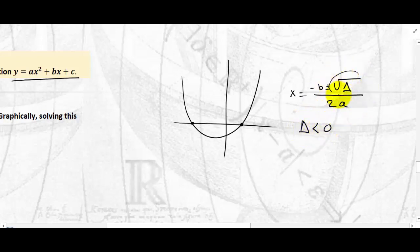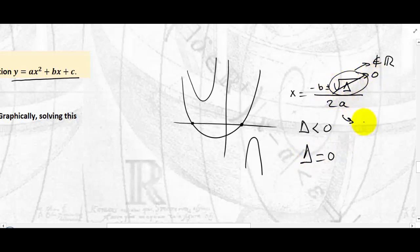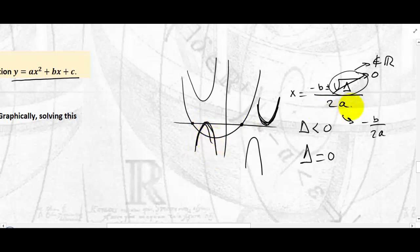If Δ is negative, the square root is not real, so the parabola has no x-intercepts — it does not cut the x-axis. If Δ = 0, there is exactly one x-intercept at x = −b/(2a), so the parabola touches the x-axis at one point. If Δ is positive, there are two distinct x-intercepts and the parabola crosses the x-axis twice.